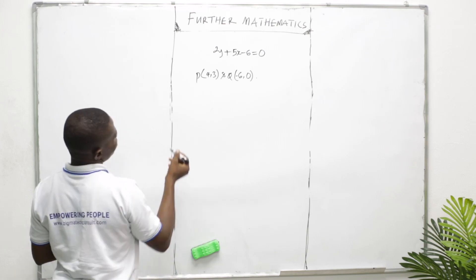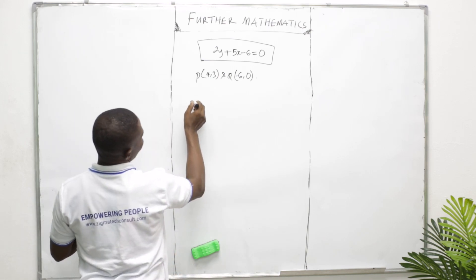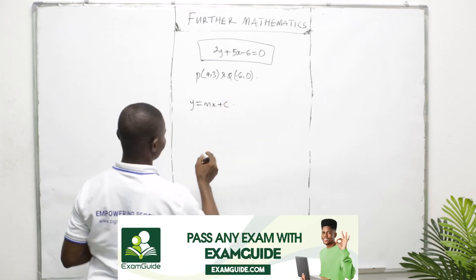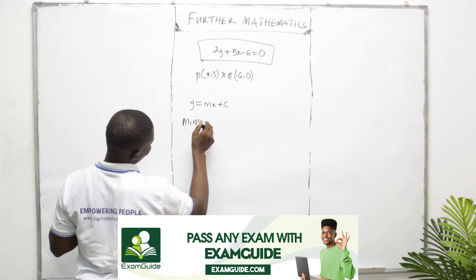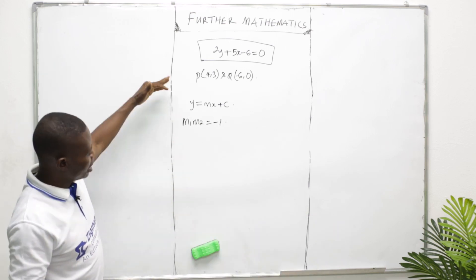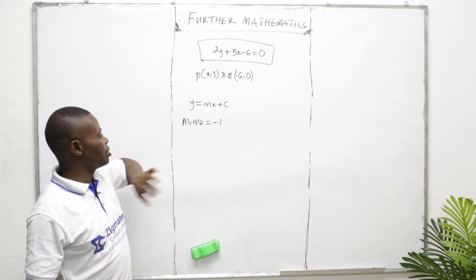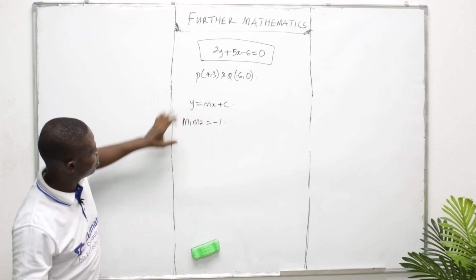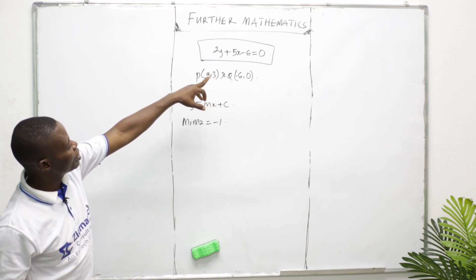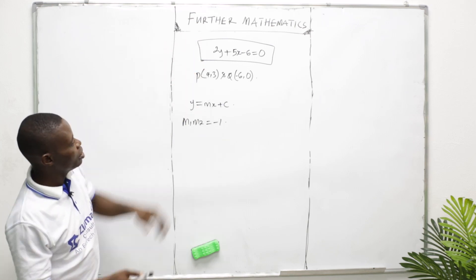Recall that Y = MX + C, and for perpendicularity M1 × M2 = −1. We have 2Y + 5X − 6 = 0, so we need to make Y the subject. We can say 2Y = −5X + 6.